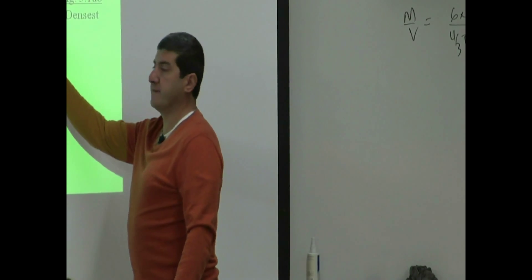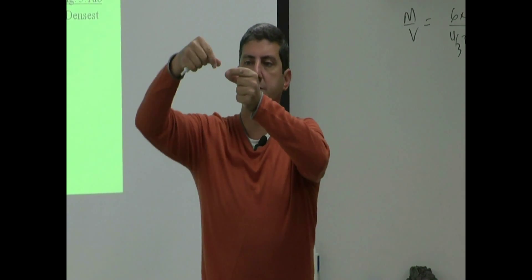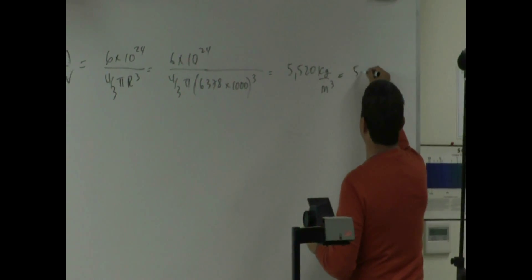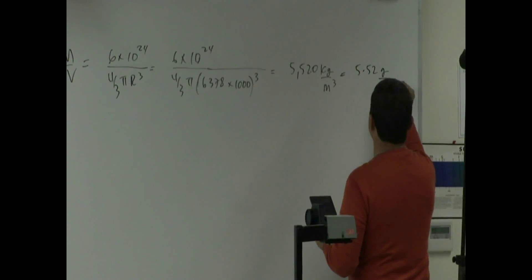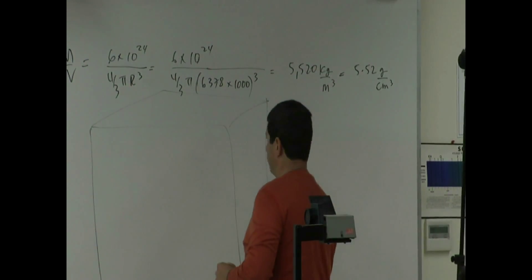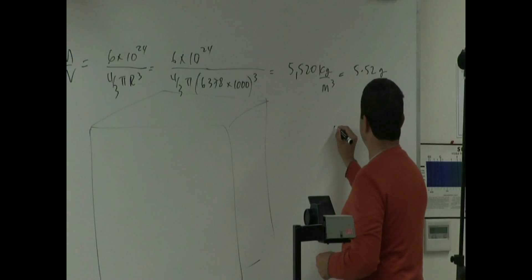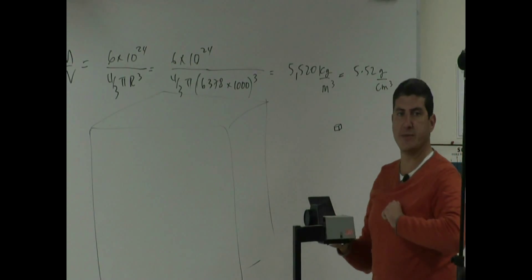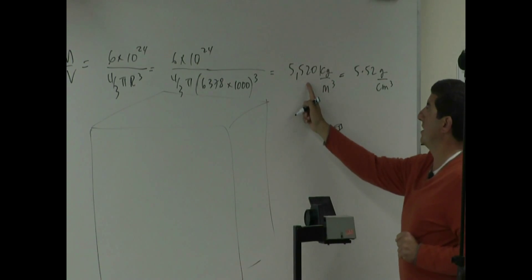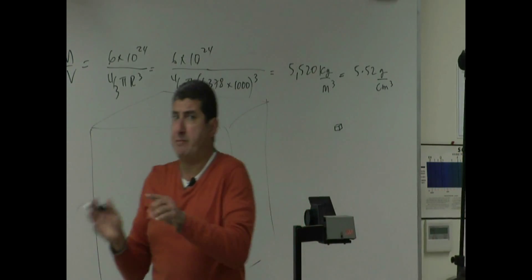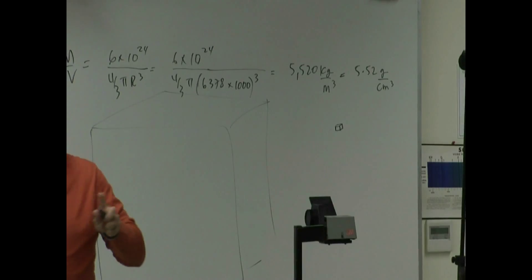You could also convert that to grams per cubic centimeter — a centimeter by a centimeter by a centimeter. In those units, you get 5.52 grams per cubic centimeter. A cubic meter is very huge; a cubic centimeter is very small. So one cubic centimeter of Earth has a mass of 5.52 grams, while one cubic meter of Earth has a mass of 5,520 kilograms. Is that dense or not dense?